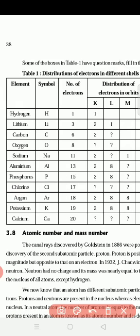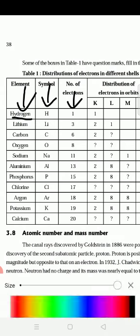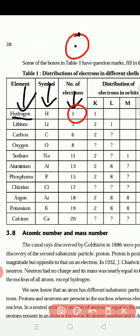Hydrogen: the element name is hydrogen, the symbol is H, and the number of electrons is one. First you should draw the diagram. Keep the nucleus, then draw the K shell. We have only one electron, so we keep one electron here — it is in the K shell. So K shell has one electron. That is over.